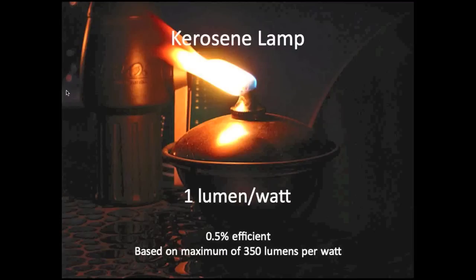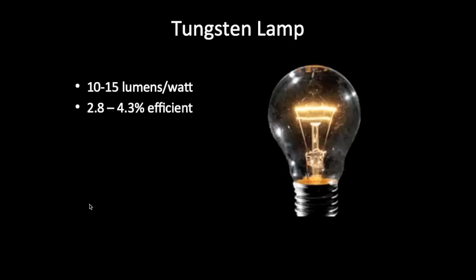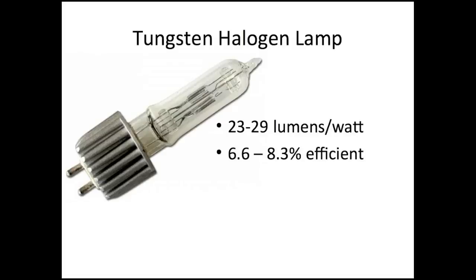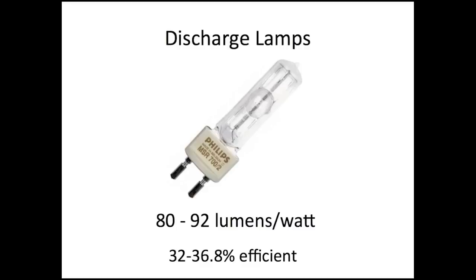A kerosene lamp puts out about 1 lumen per watt — about half a percent efficient based on 350 lumens per watt for white light. A household A lamp outputs about 10 to 15 lumens per watt, approximately 3 to 4 percent efficient. Stage lights using tungsten halogen get approximately 23 to 29 lumens per watt — about 7 to 8 percent efficient. Discharge lamps output about 80 to 92 lumens per watt, which is about 32 to 37 percent efficiency.